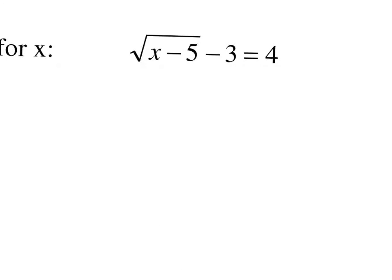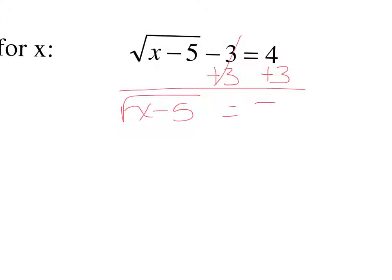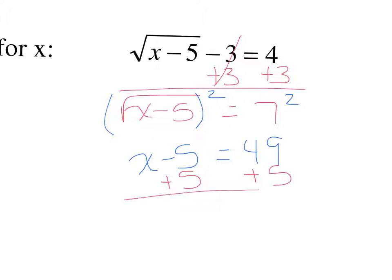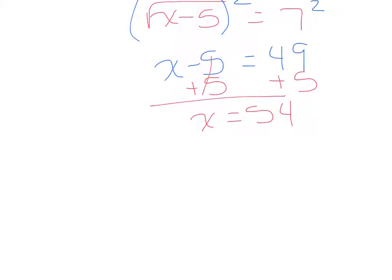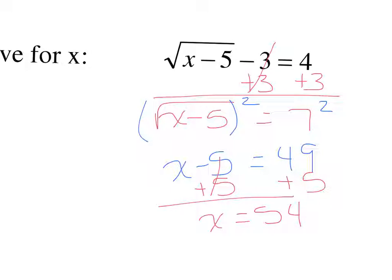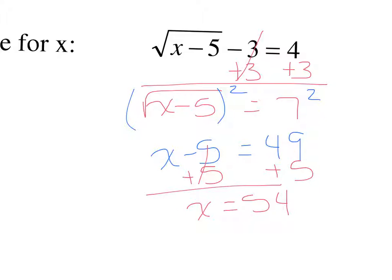The next equation is the square root of x minus 5, minus 3, equals 4. We isolate the radical by adding 3 to both sides, giving the square root of x minus 5 equals 7. Squaring both sides gives x minus 5 equals 49, then adding 5 gives x equals 54. Checking mentally: 54 minus 5 is 49, the square root of 49 is 7, and 7 minus 3 makes 4. That checks out.